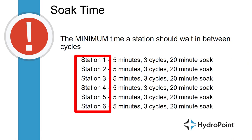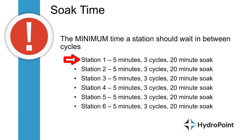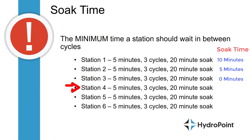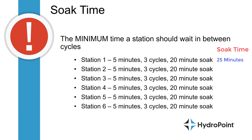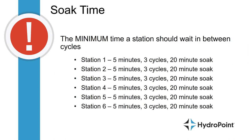Now let's say you have a 6-station controller set up the same way — 5 minutes 3 times for every station with a 20-minute soak time for each. At your programmed start time, station 1 will begin to irrigate, run its 5 minutes, and start its 20-minute soak. Station 2 will immediately kick on, then the program moves sequentially through stations 3, 4, 5, and 6. Once the entire controller has irrigated, station 1 will be back in the queue. The program checks the soak time for station 1 — it will be 25 minutes since that station last irrigated, so we've passed the minimum soak time and that station is ready to irrigate again immediately. The program would run all 6 stations 3 times without any downtime.